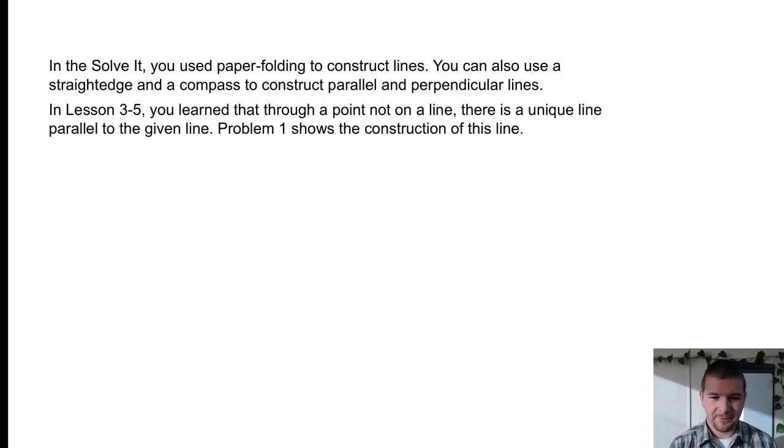In Lesson 3-5, you learned that through a point not on a line, there is a unique line parallel to the given line. Problem 1 shows the construction of this line.